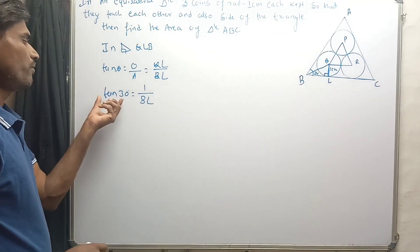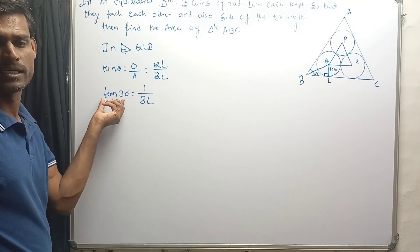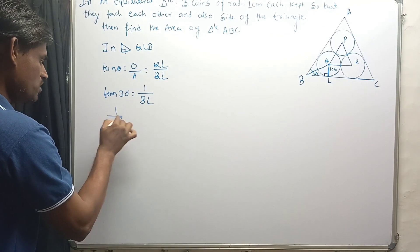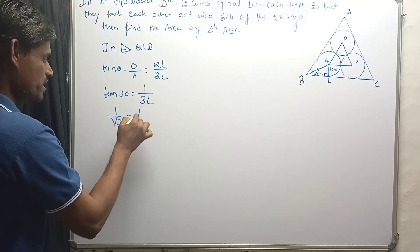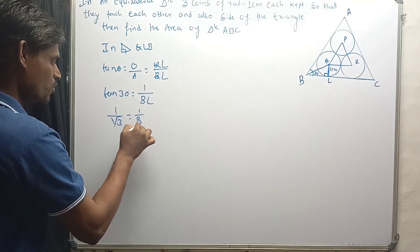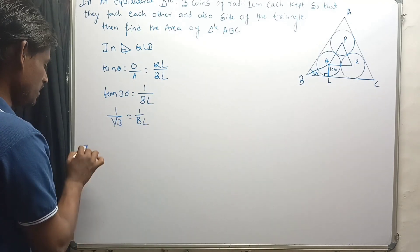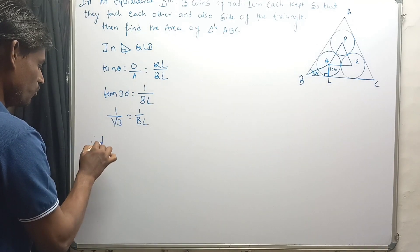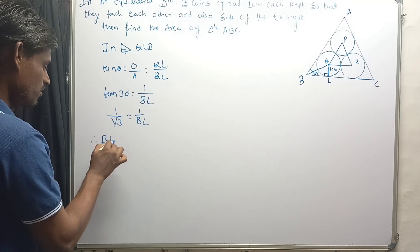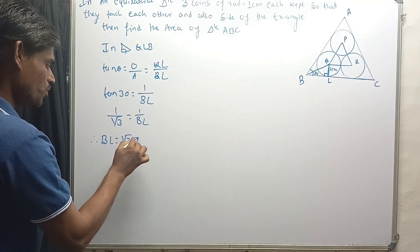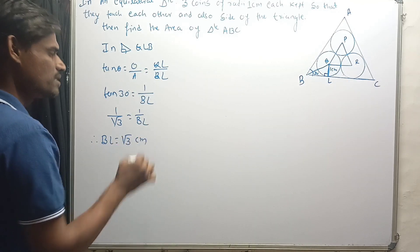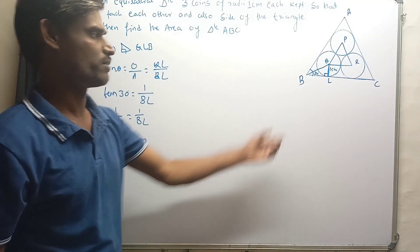So 1/√3 equals 1/BL, therefore the length of BL equals √3 centimeters.